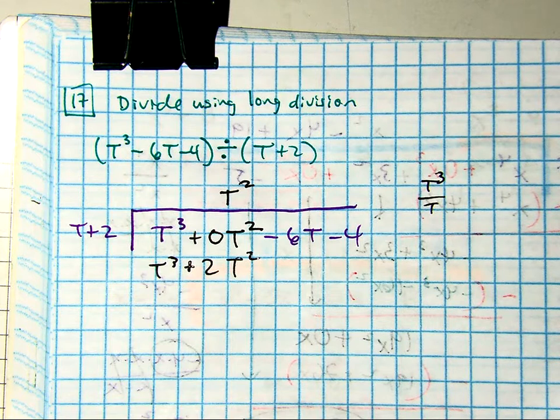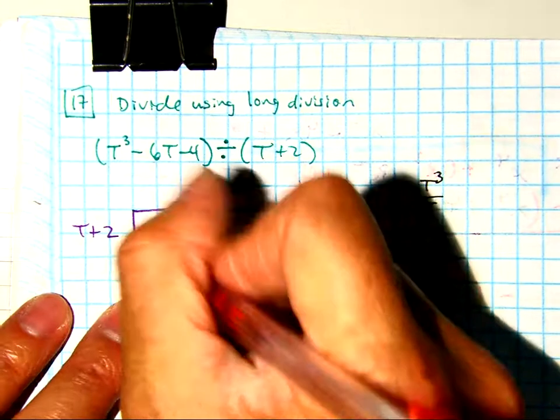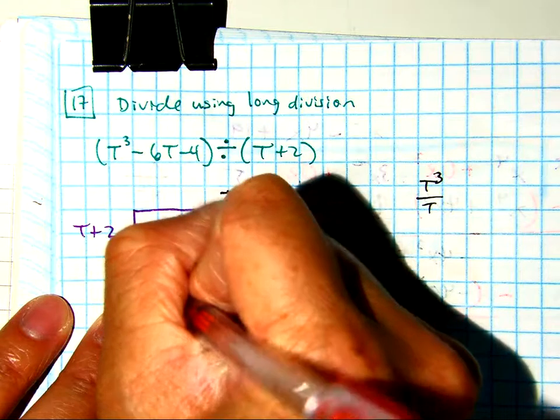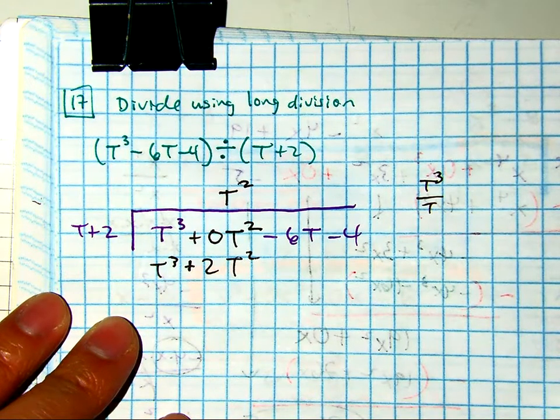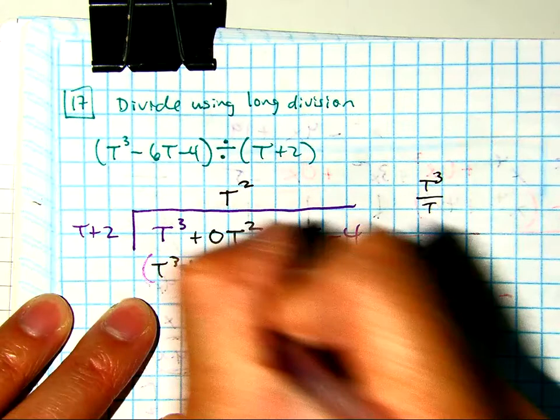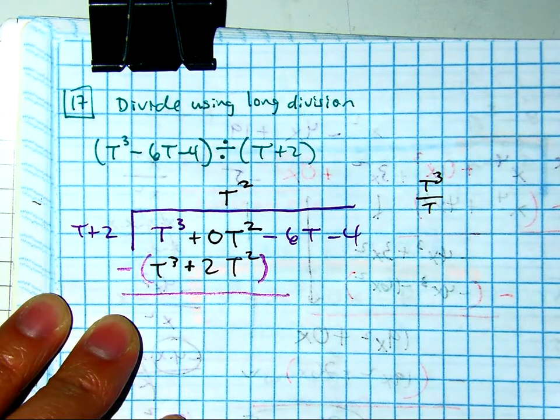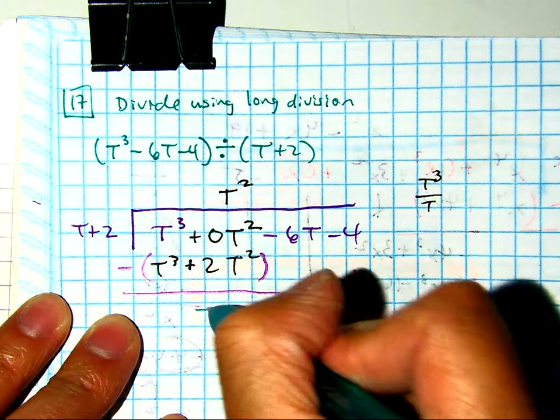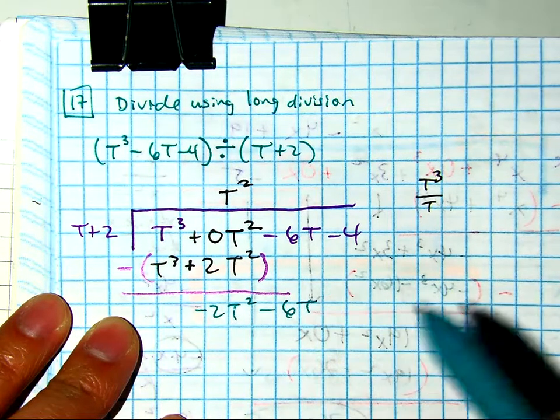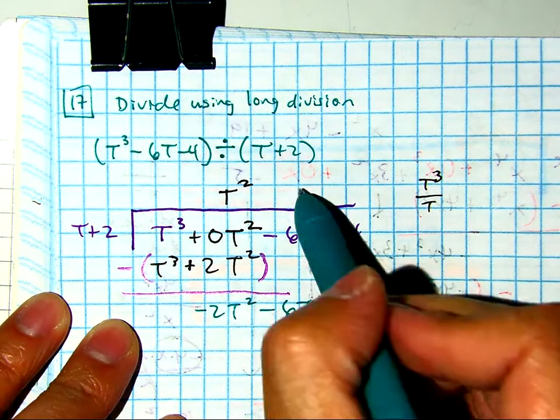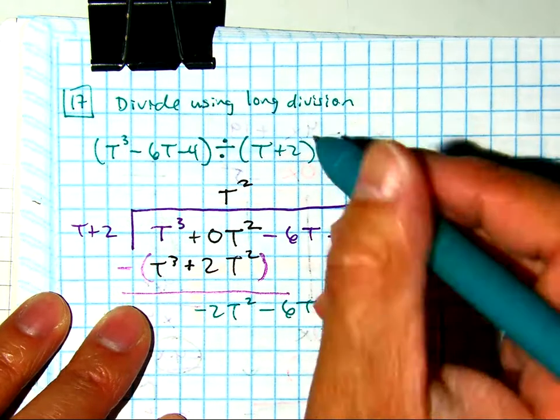Kimberly, what's next? Subtract. What do you want to, what do I put here? Positive or negative? Positive.